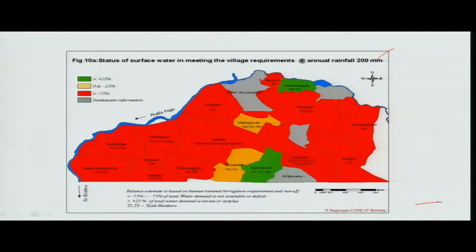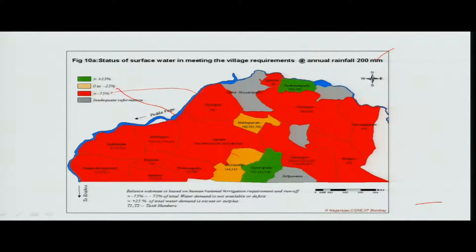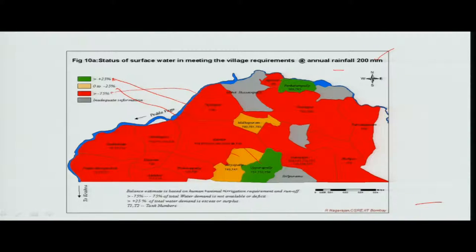Based on calculations and estimations, if there is going to be 200 millimeters of rainfall, the red-colored areas will have adequacy of only 30% — meaning 70% of requirements are not going to be filled up. In other areas, only 25% is not going to be filled up, while in some areas requirements are partly met. This is a way of expressing the adequacy of a village under a particular annual rainfall condition.